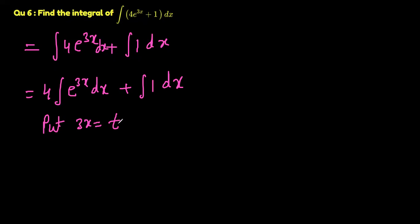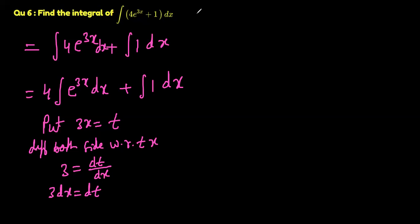Now, if 3x is t, differentiating both sides with respect to x: the derivative of 3x is 3 and derivative of t would be dt by dx. 3 times dx is equal to dt, or the value of dx will be equal to dt divided by 3.